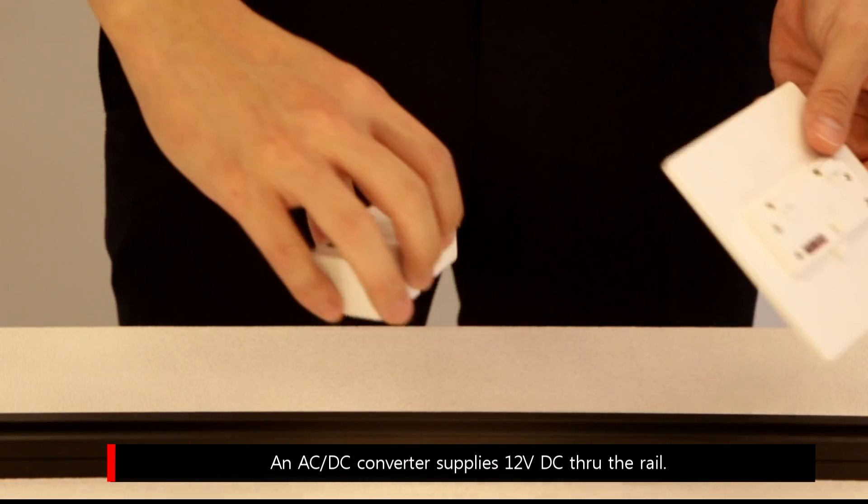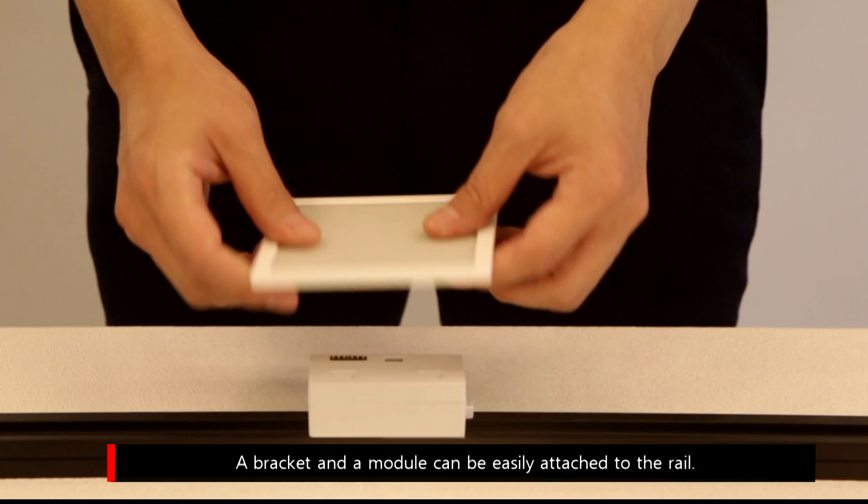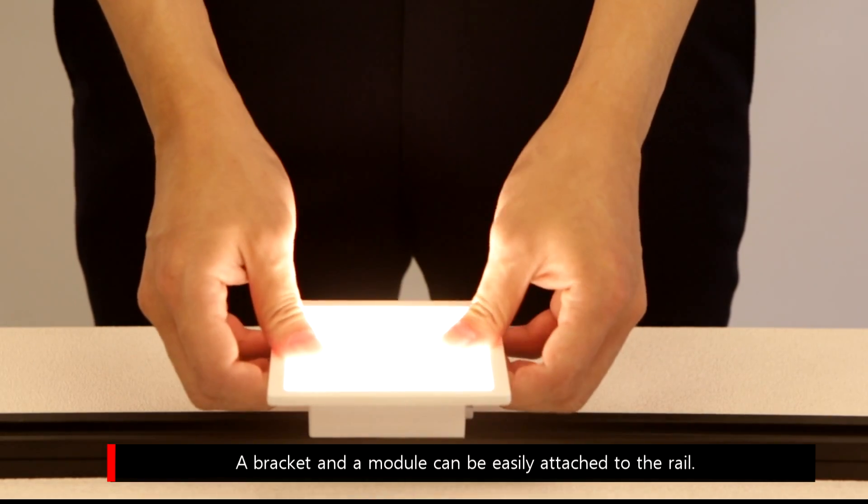An AC-DC converter supplies 12V DC through the rail. A bracket and a module can be easily attached to the rail.